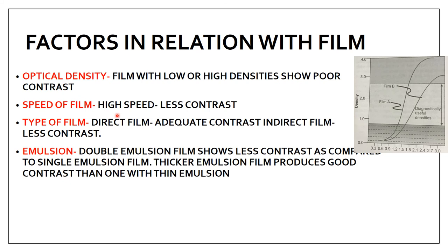The next factor is the speed of the film: if you are using a high speed film, the contrast will be low — inversely proportional. The next is the type of film, whether direct or indirect: a direct film shows adequate contrast, while an indirect film used with an intensifying screen shows less contrast. The next factor is emulsion: a double emulsion film shows less contrast and a single emulsion film shows high contrast. Also, a film with thicker emulsion produces better contrast than one with thinner emulsion.